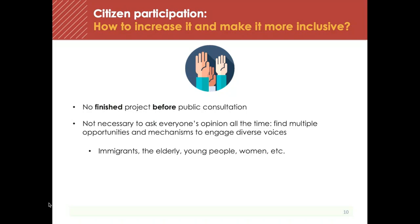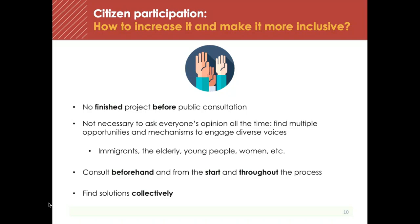It is really important to do engagement that specifically reaches out to communities that may typically be left out of planning processes. This could include immigrants, the elderly, young people, people experiencing poverty, and any other social or cultural factors that might make participation more challenging. We want to make sure there are opportunities that work for these communities so that we can get as many voices as possible. We suggest consulting people before the start of the project and all throughout, and working to find solutions collectively — having citizens and planners and designers work together.